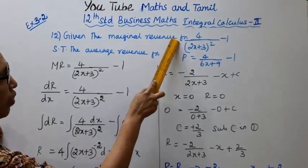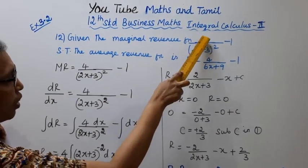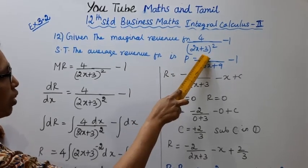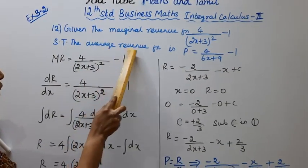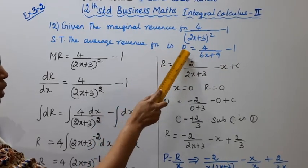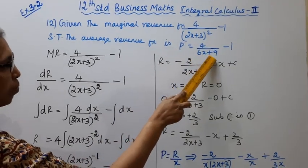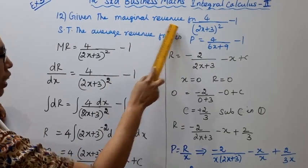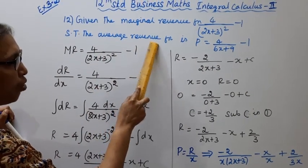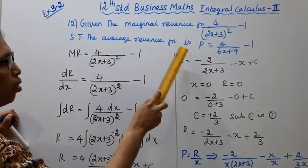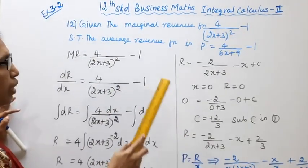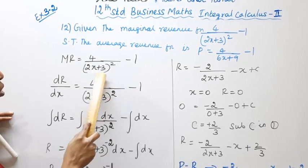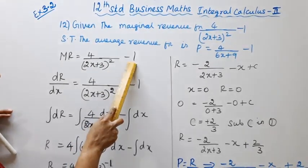Given the marginal revenue function: 4/(2x+3)² - 1. Show that the average revenue function is P = 4/(6x+9) - 1. Marginal revenue is equal to 4/(2x+3)² - 1.